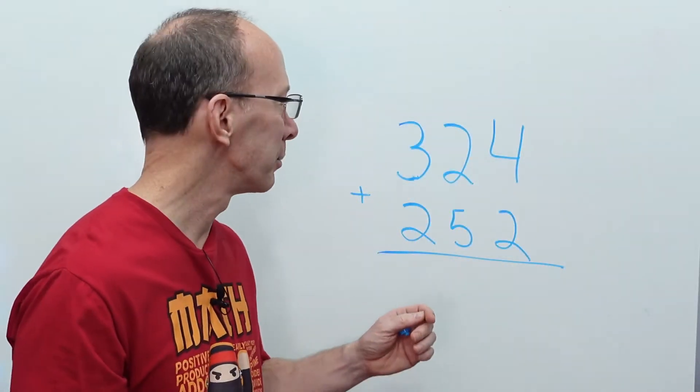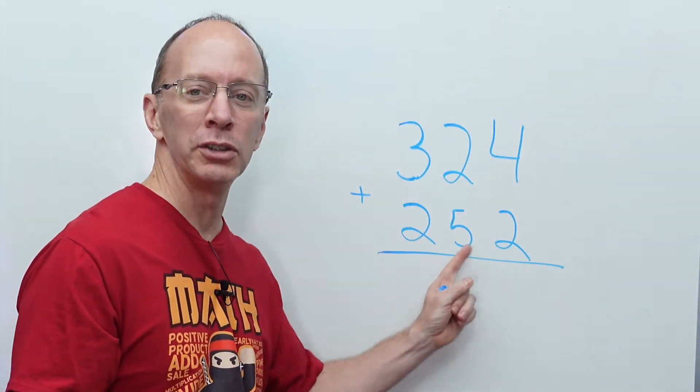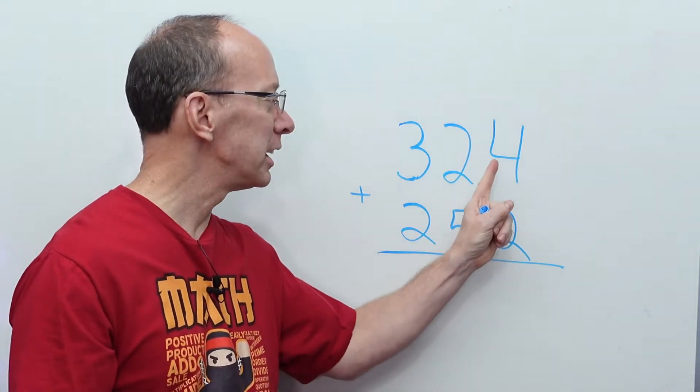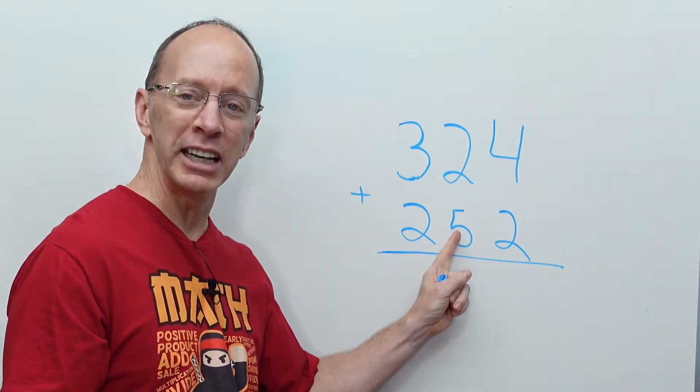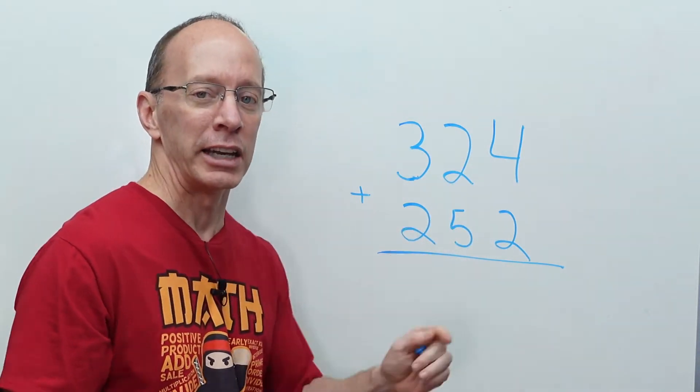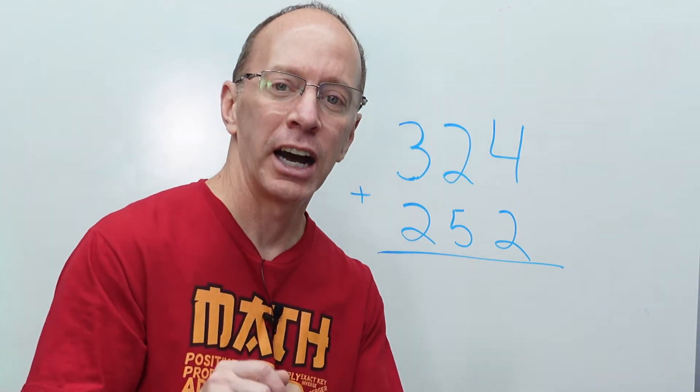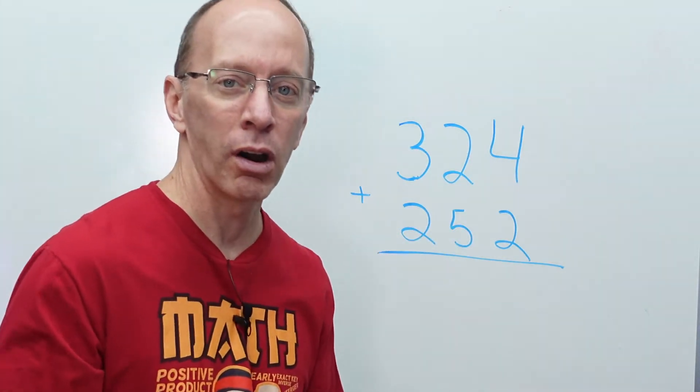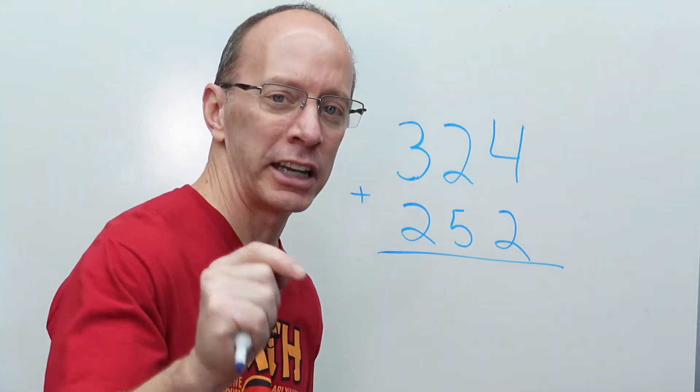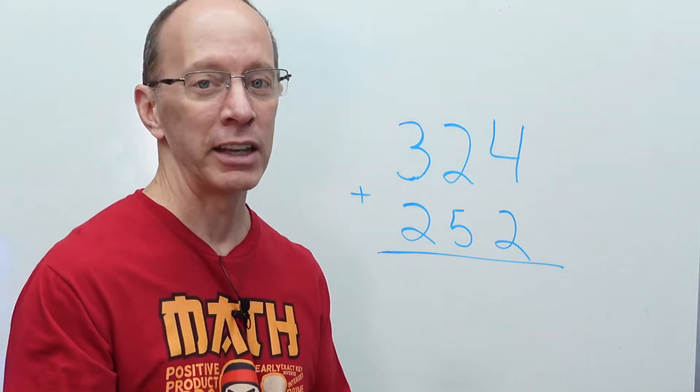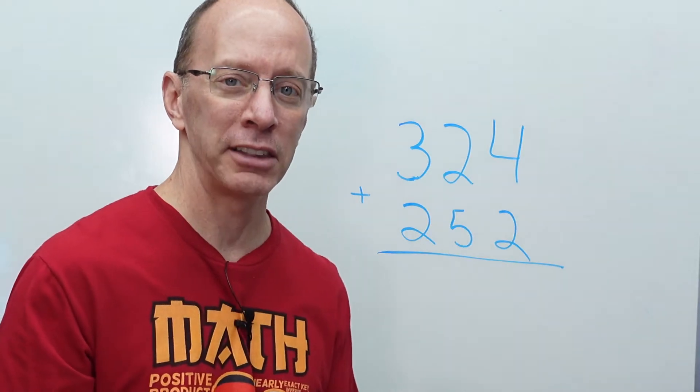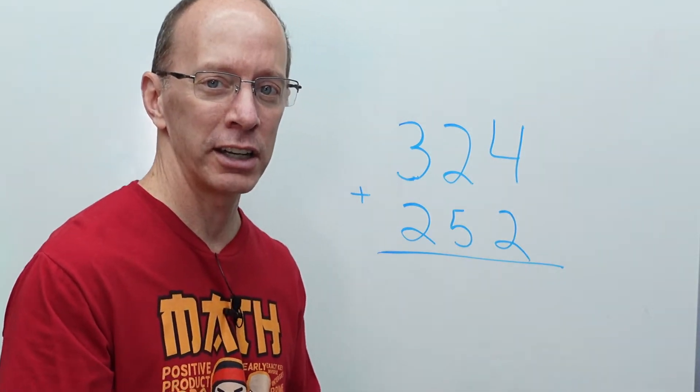Okay, we've got our first problem here. We have 324 plus 252. Just a review here. This is the ones column, this is the tens column, and here we have the hundreds column. Now remember, there is a rule when we add numbers. You always add the ones first, and then you regroup if you need to. Then you add the tens second, and if you have to regroup you do that. And then the third step is you add the hundreds. Are you ready to get started? Let's do it!